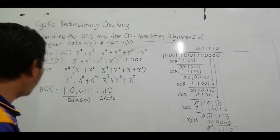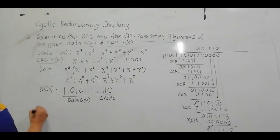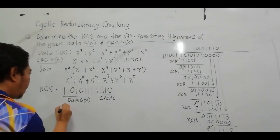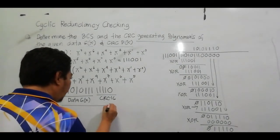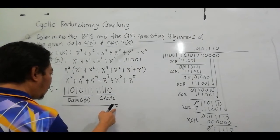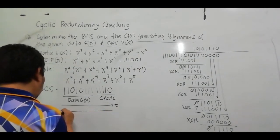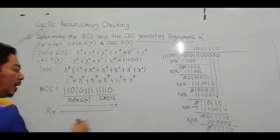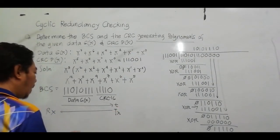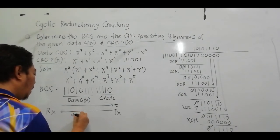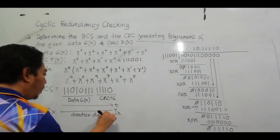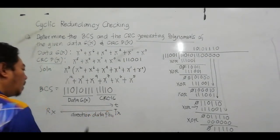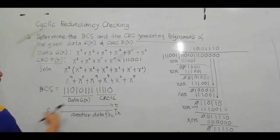At the receiver end, this data will be transmitted. The direction of time and the direction of data flow go from the transmitter to the receiver. So this is the direction of time and this is the direction of data flow from transmitter to receiver.